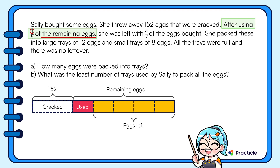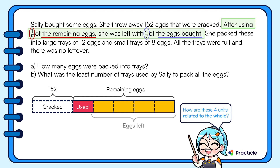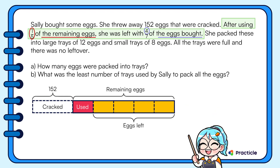Four-fifths of the remaining eggs is the same as four-sevenths of the eggs that Sally bought. How are these four units related to the whole? The numerator of four-sevenths is the same as the number of units we have, so we can keep our model as is. Since the denominator of four-sevenths is seven, we should divide the whole into seven units. If we need seven units total and already have four, how many units represent the remaining parts of the model?